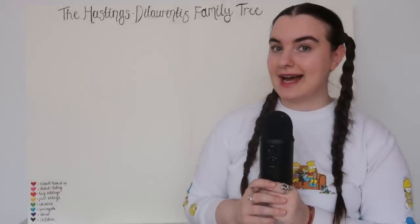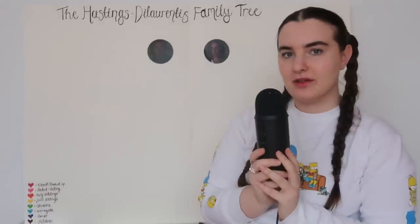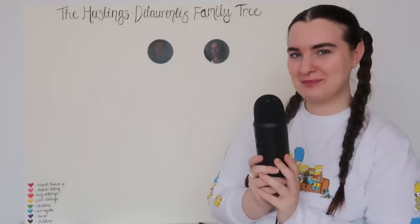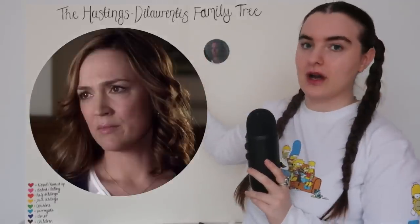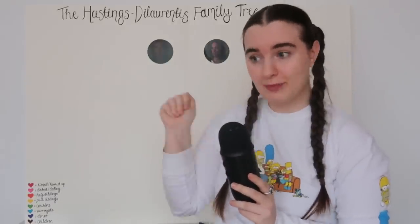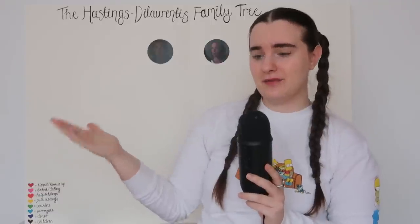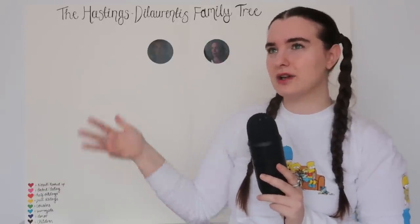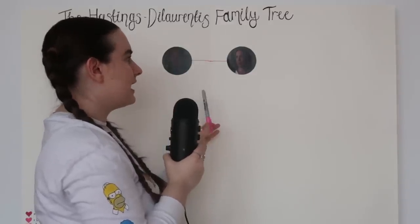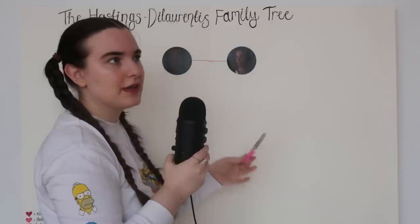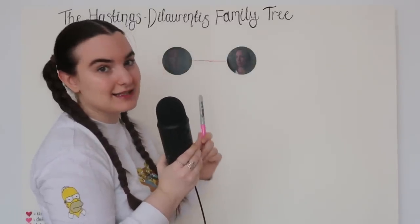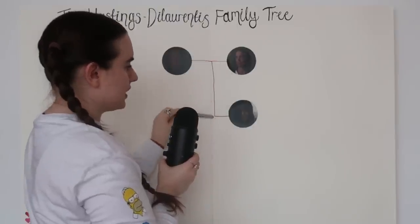We are going to start with Veronica and Peter Hastings. So we have Peter and we have Veronica. These two are married when the show begins, and I think they stay married despite having quite a few rough patches — I think they finish the show married. They end up having a child together, who I think out of the children we're going to talk about was the first born. And that is Melissa Hastings — Peter and Veronica's biological child.